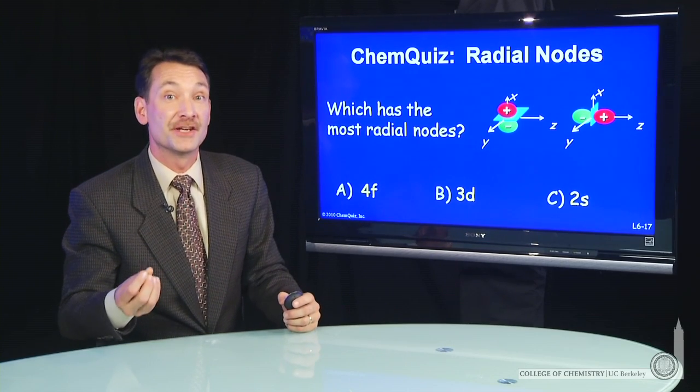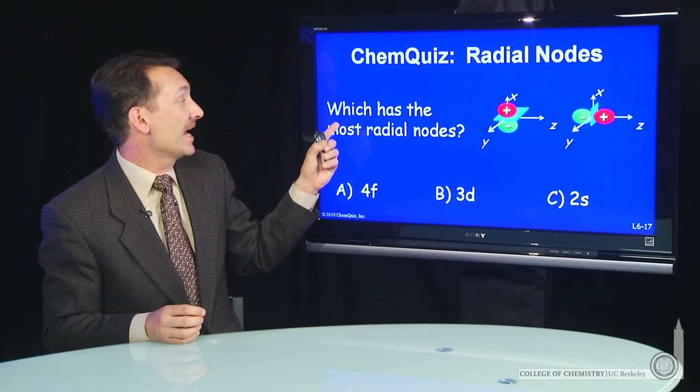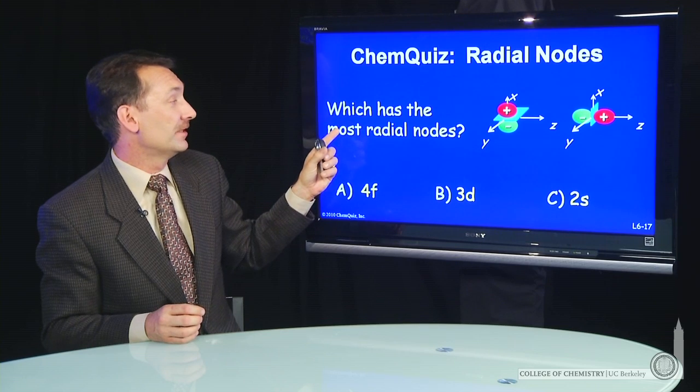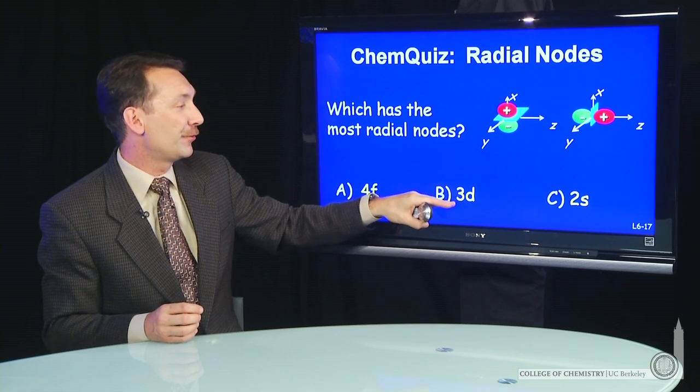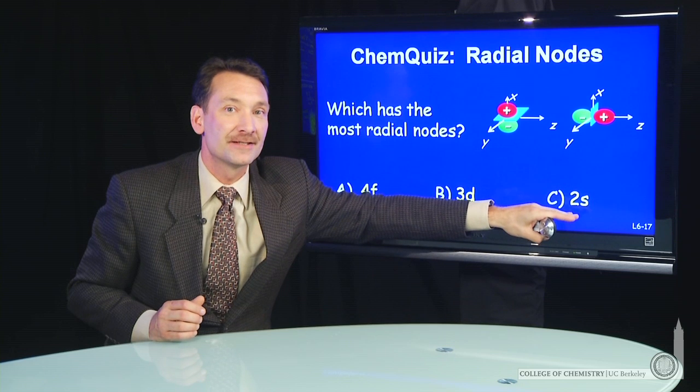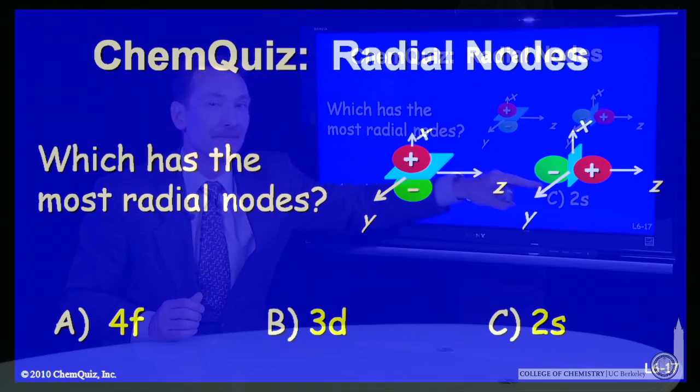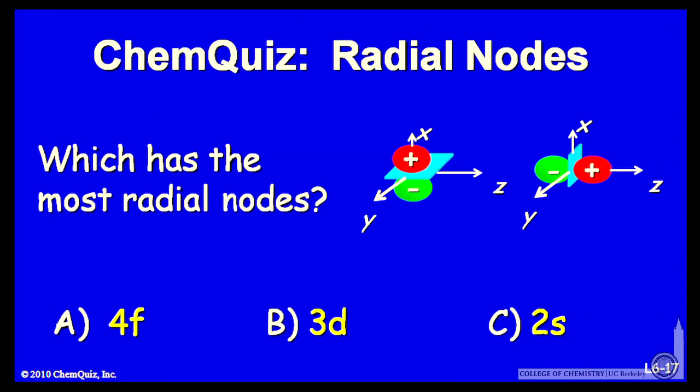Let's look at some more orbital shapes and orientation. So if I ask you which orbital has the most radial nodes, the 4f, the 3d, or the 2s, what would your conclusion be? Think about that for a minute and make a selection.